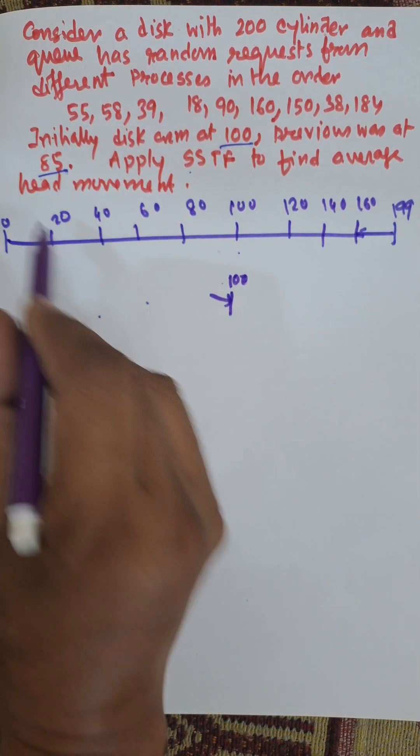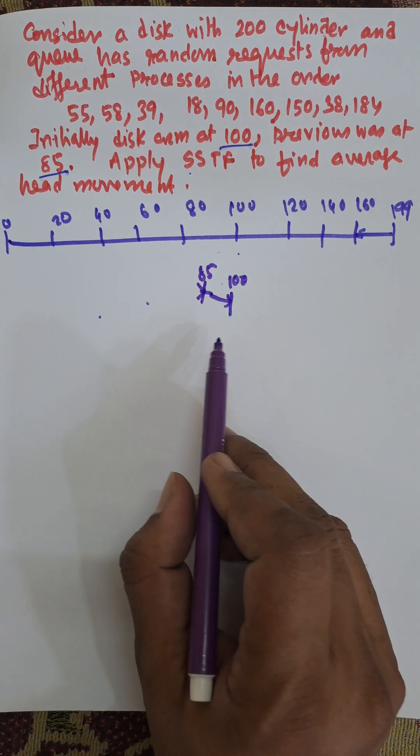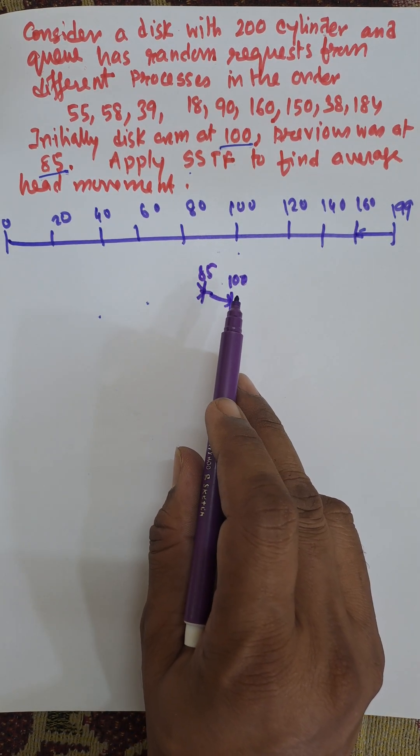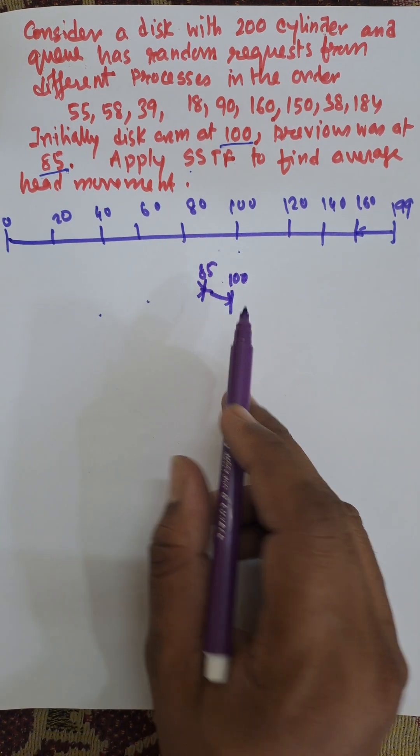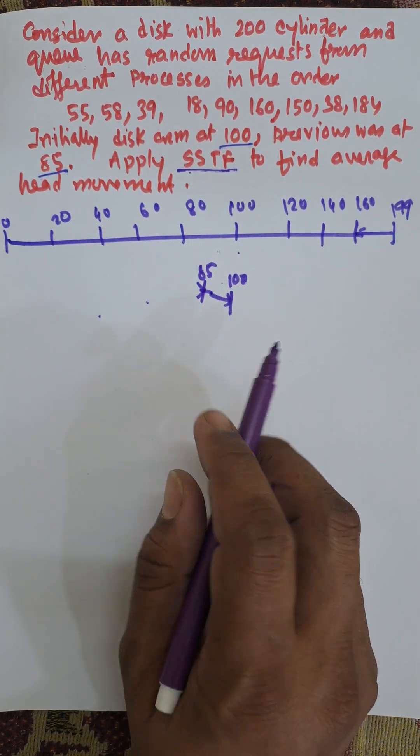Previous disk arm was at 85. Now we need to calculate disk movement from the initial position that is 100. Shortest Seek Time First allows us to move to the next shortest cylinder where we can move easily.